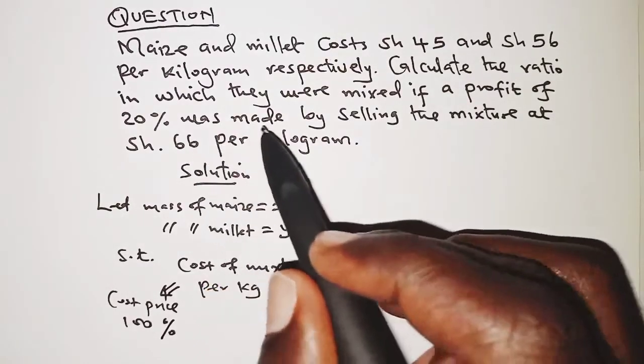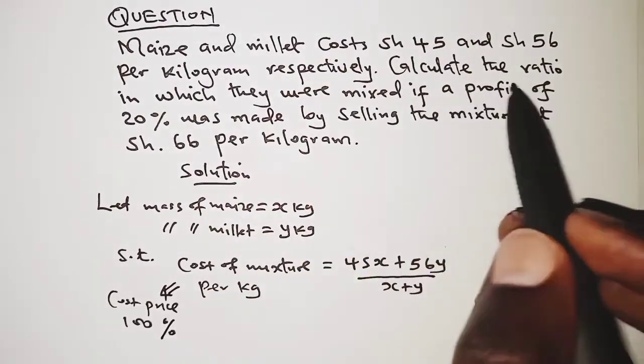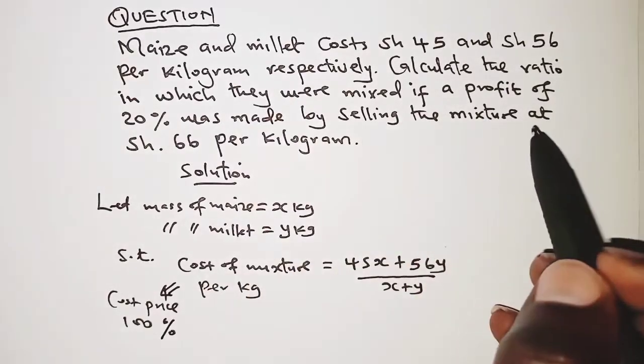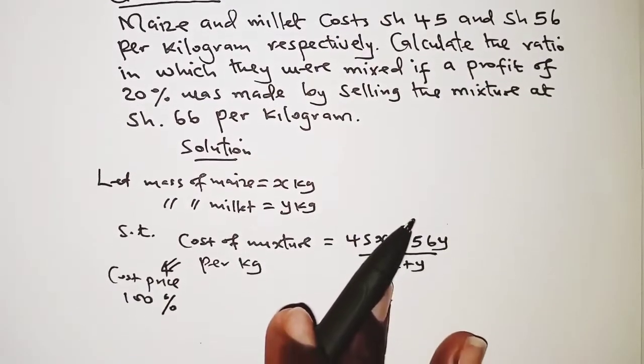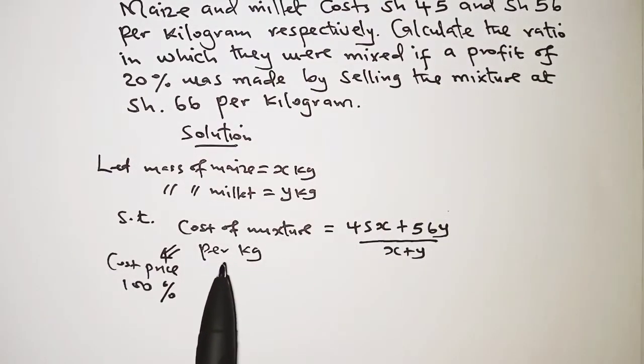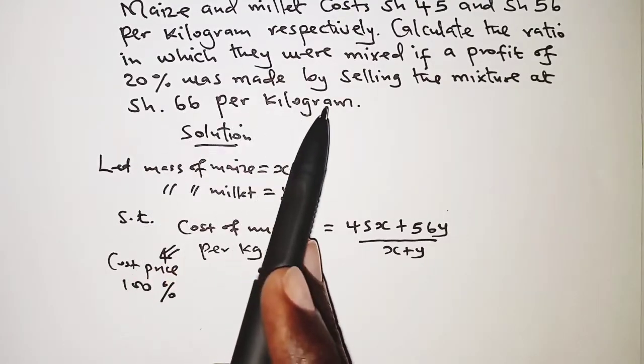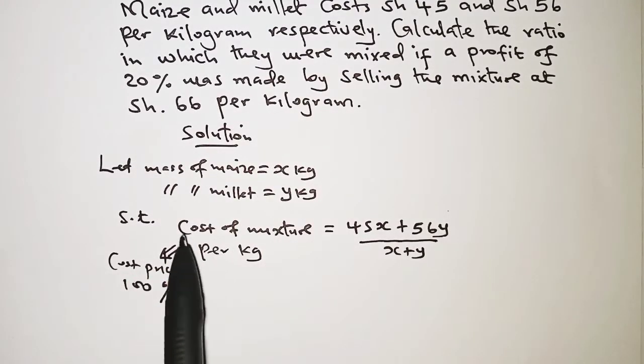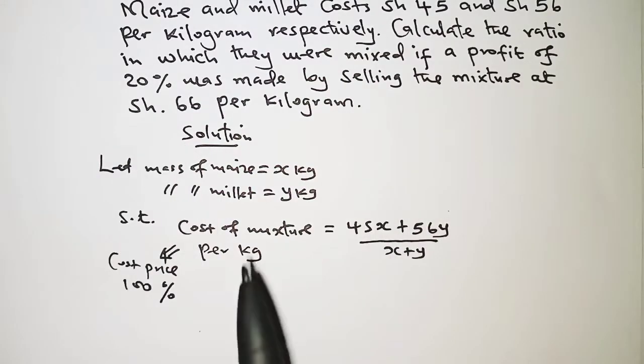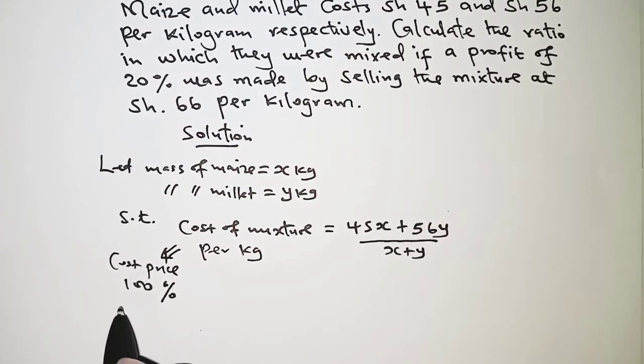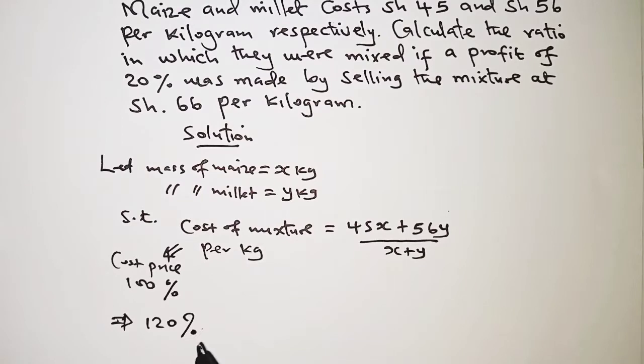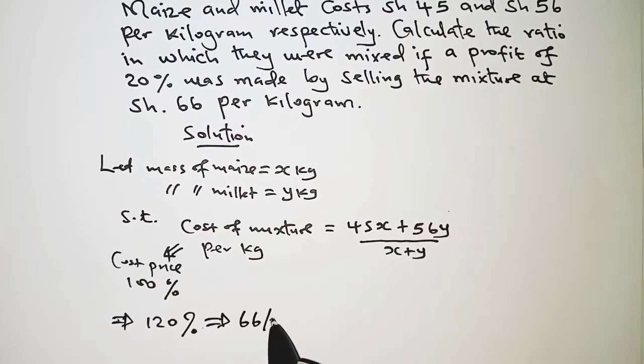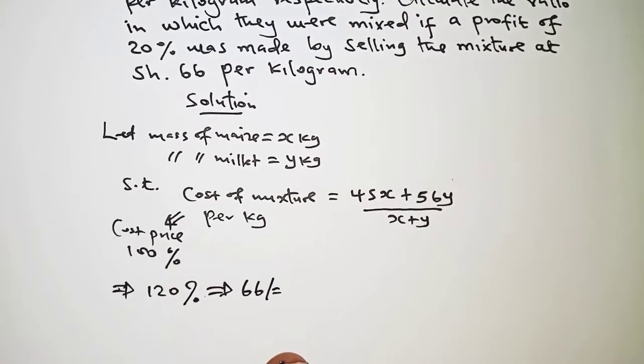Just a minute, we are told if a profit of 20 percent was made by selling the mixture at 66 shillings per kilogram. That means if the mixture was sold at 66 shillings per kilogram then a profit of 20 percent was made. So that simply implies that 120 percent was the 66 shillings. So what is the cost of the mixture?